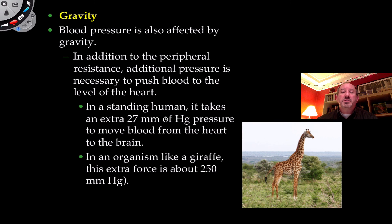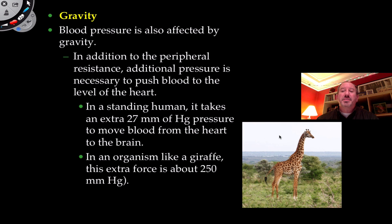Gravity is a particularly interesting factor. When a person is standing, the heart needs to work a little harder — additional pressure is needed to push blood into the upper extremities. The increase is about 25 to 27 millimeters of mercury to move blood from the heart to the brain while standing. It must be really difficult for a giraffe, because the head is much higher than the heart — it requires about 250 millimeters of mercury of pressure to get blood to the brain of a giraffe.